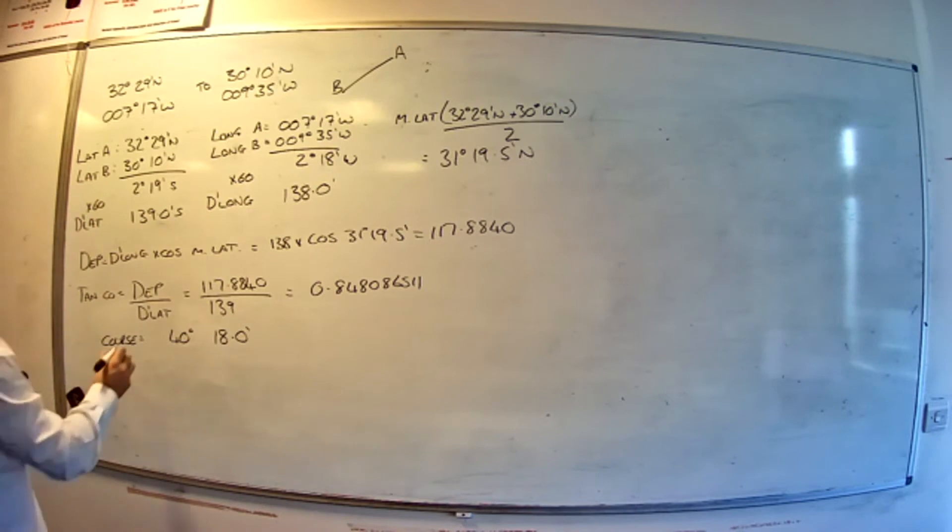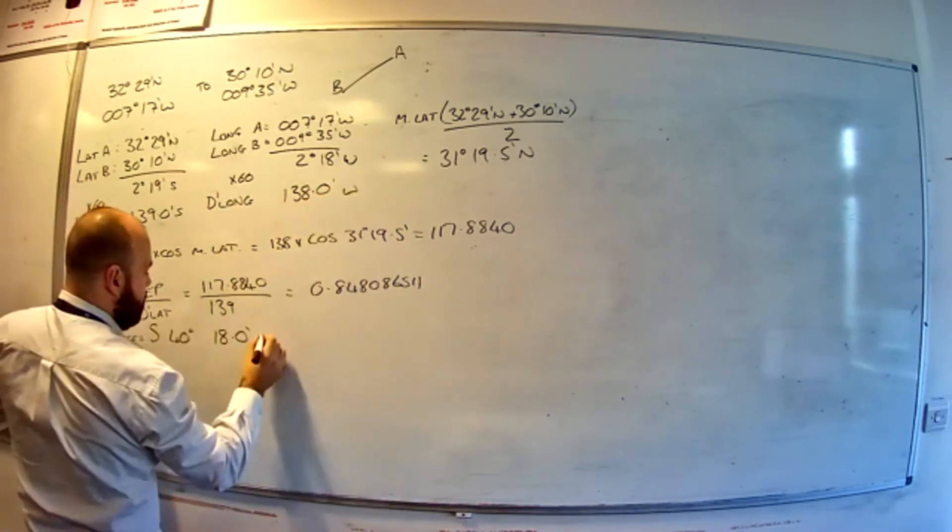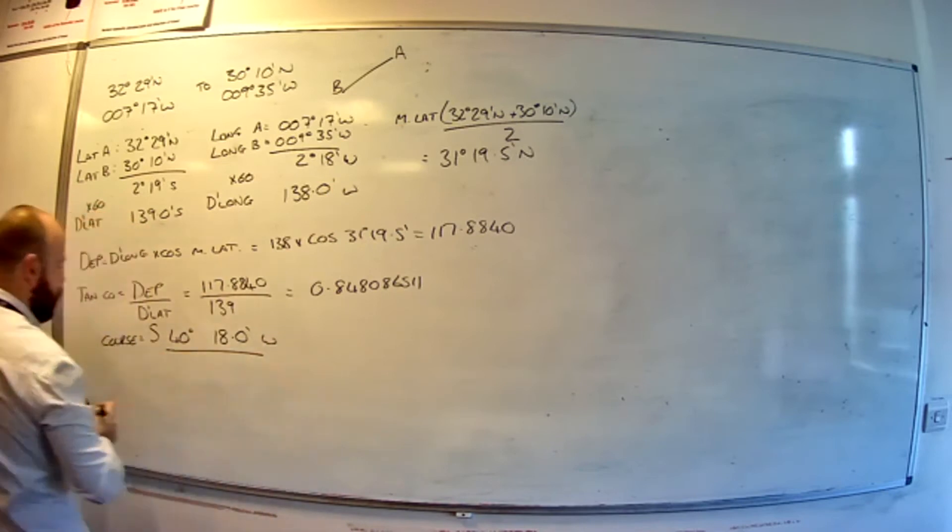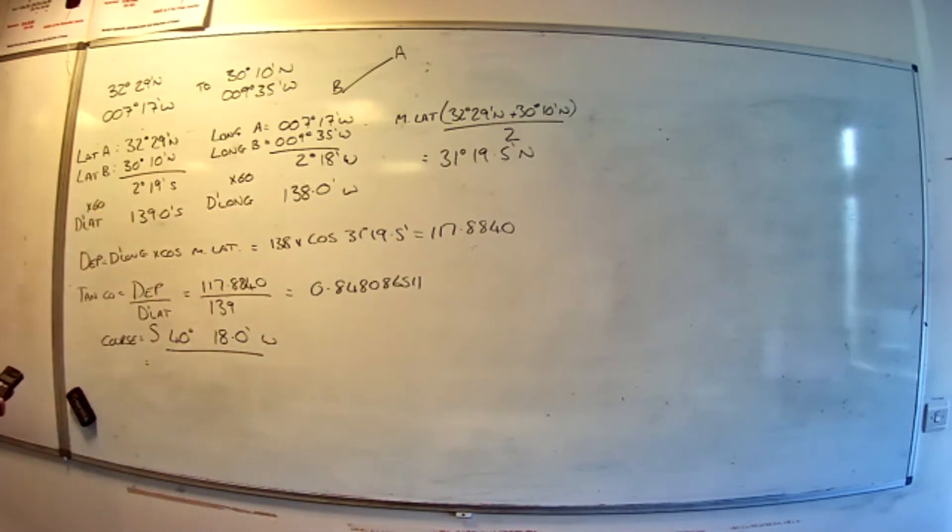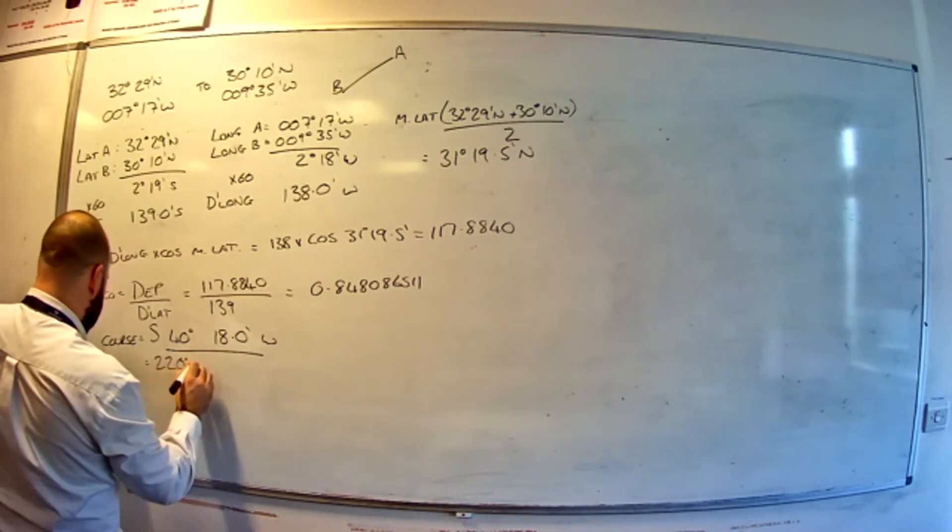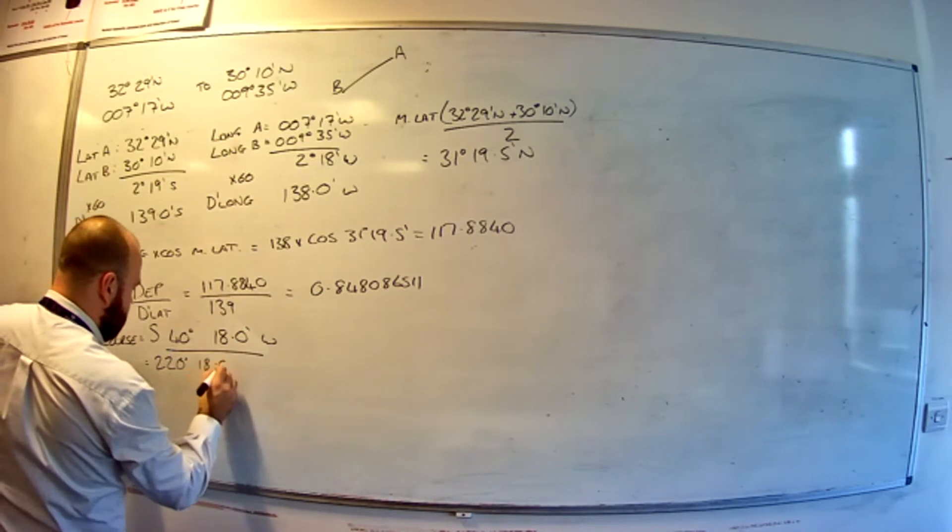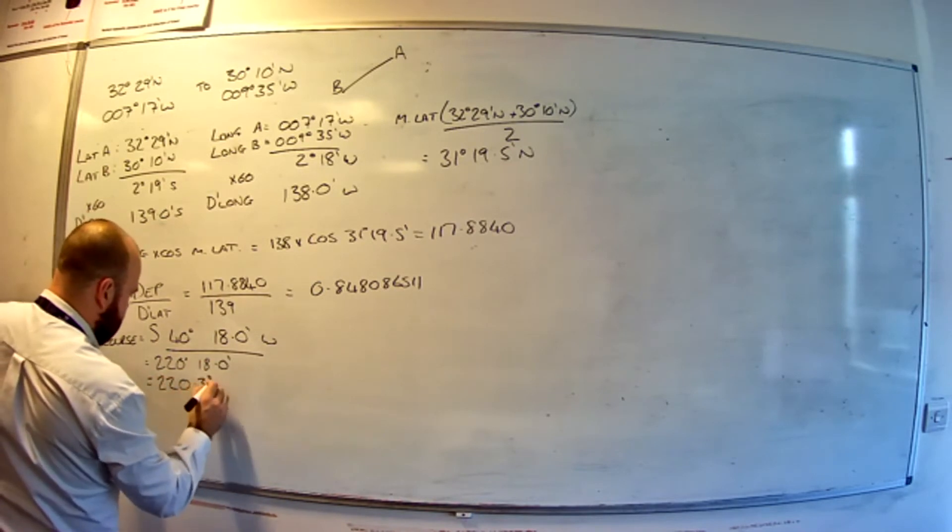Name it based on your DLat, south. Name it based on your DLong, west. And that's the course we're going to use later down the line. So south and west, we're going to add 180 to that to get 220 degrees 18.0 minutes, which is 220.3 degrees true.